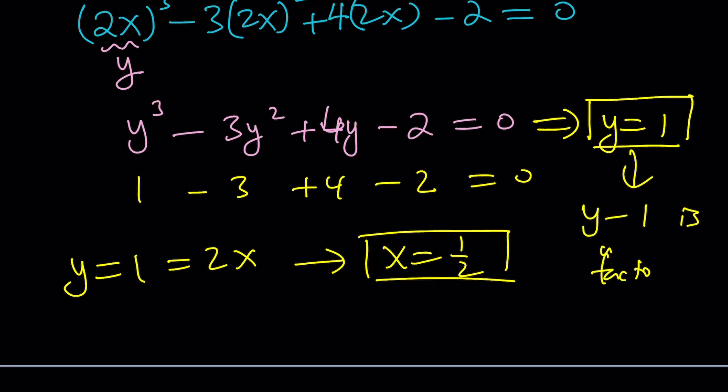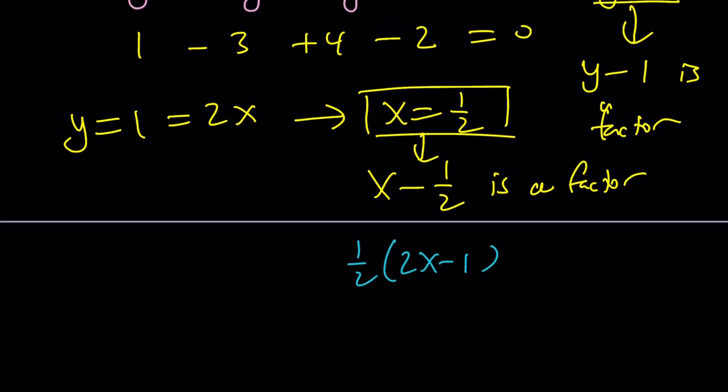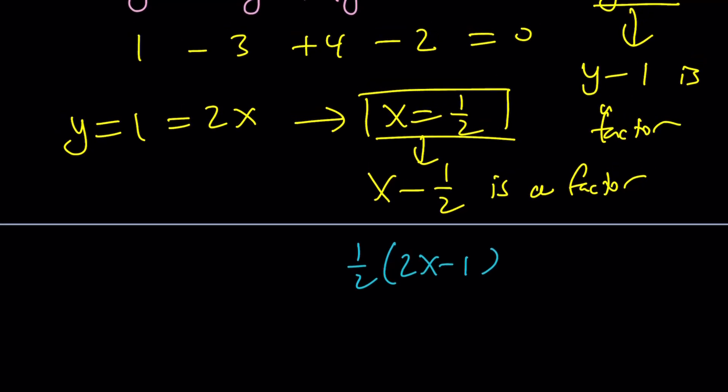And this implies x - 1/2 is a factor, but x - 1/2 is not a good one. You don't want to deal with a fraction, so you can eliminate it by writing this as 1/2 times (2x - 1). And if this is a factor, then 2x - 1 is definitely a factor.